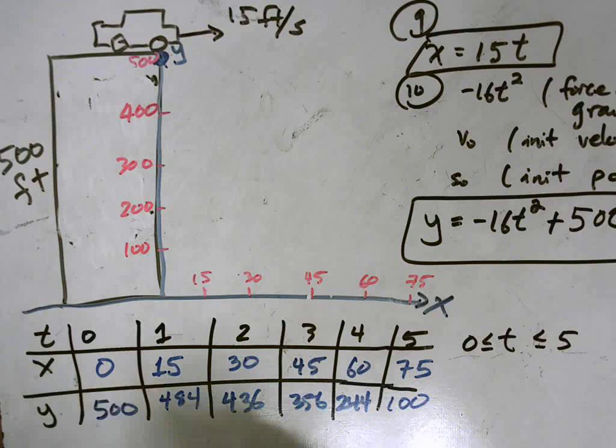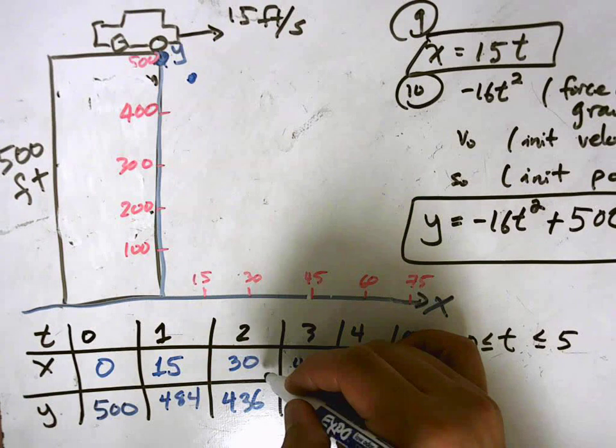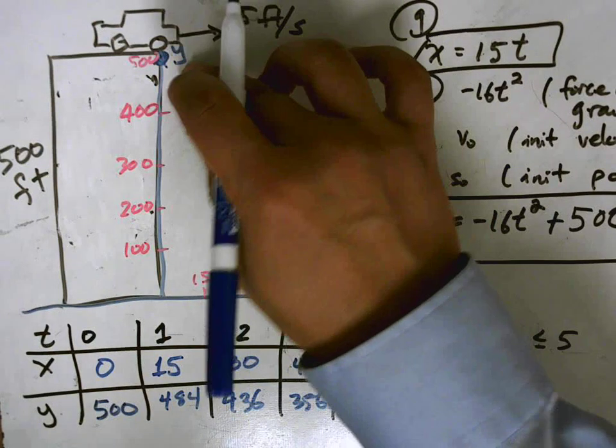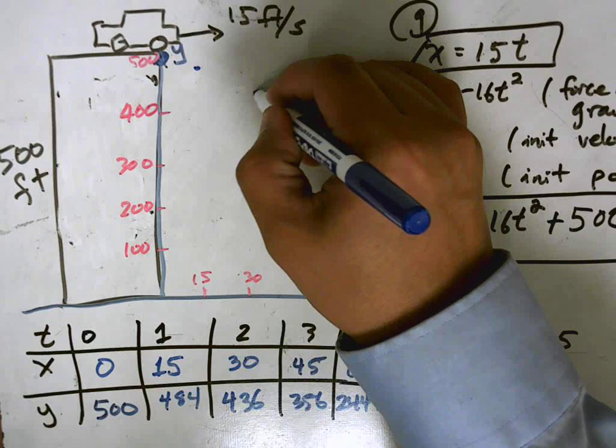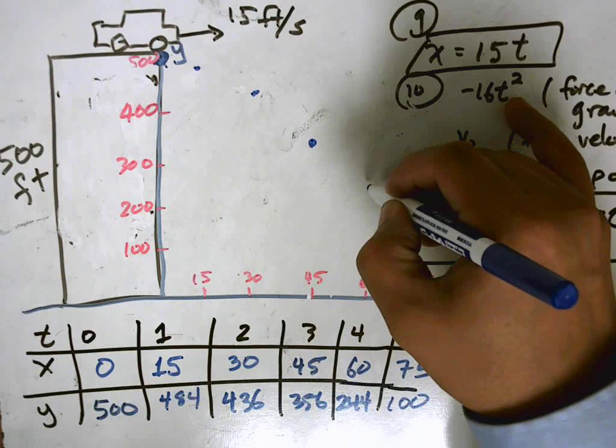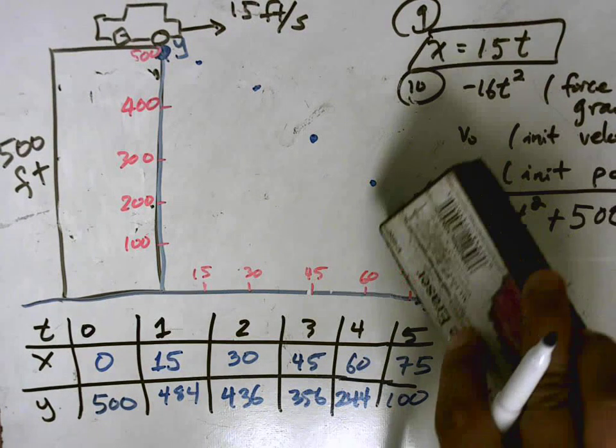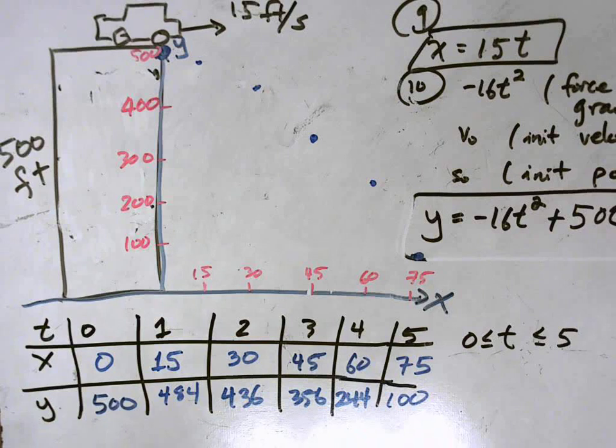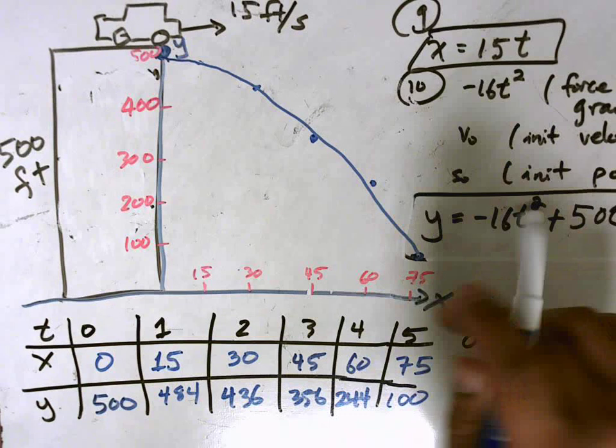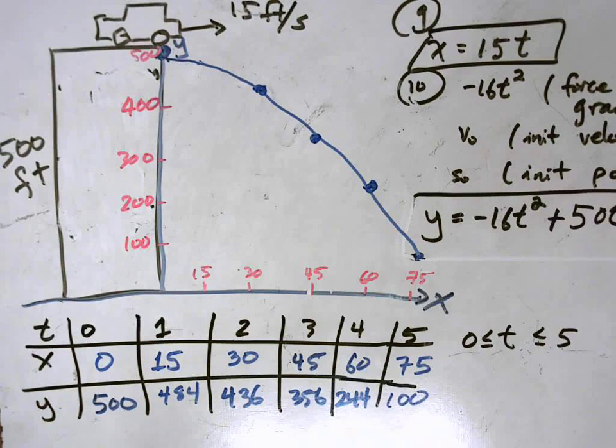So I already got 1 here before t is equal to 0. Now 15, 484, so approximately here. 30, 436, about there. 45, 356. 60, 244. And finally, 75, 100. Remove some of these other things. This board here is getting a little bit cluttered. So we can connect all of these points together. And that gives us a pretty good picture for the position of the car as it's falling off the cliff.